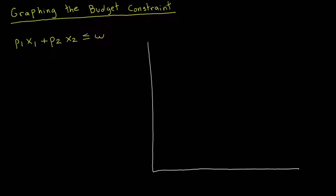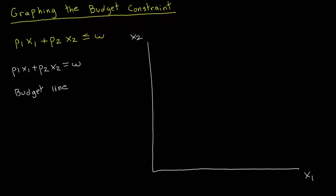Now I'd like to illustrate how to graph the budget constraint. The starting point is to graph the case where the constraint holds with equality — where P1·X1 + P2·X2 equals W. This equation is known as the budget line. Let's put good 1 on the horizontal axis and good 2 on the vertical axis, which is the usual convention, and go ahead and graph this budget line.